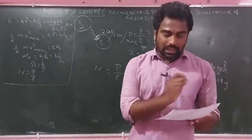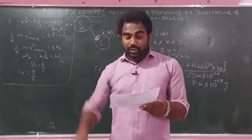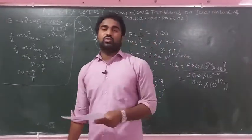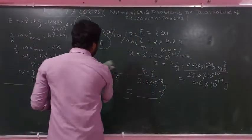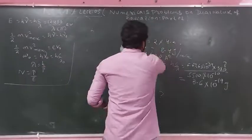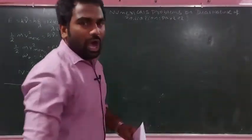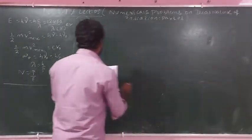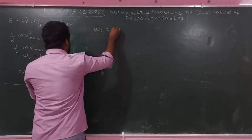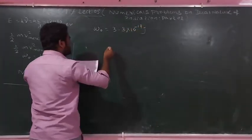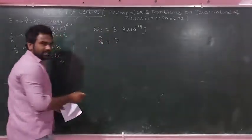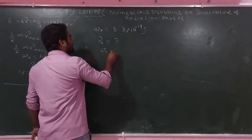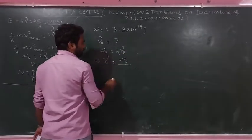Question number 51: A photosensitive material has a work function of 3.3×10⁻¹⁹ joule. Taking Planck's constant as 6.6×10⁻³⁴ joule-second, find the threshold frequency. The threshold frequency is called ν₀. The work function formula is W₀ = hν₀, so ν₀ = W₀/h.